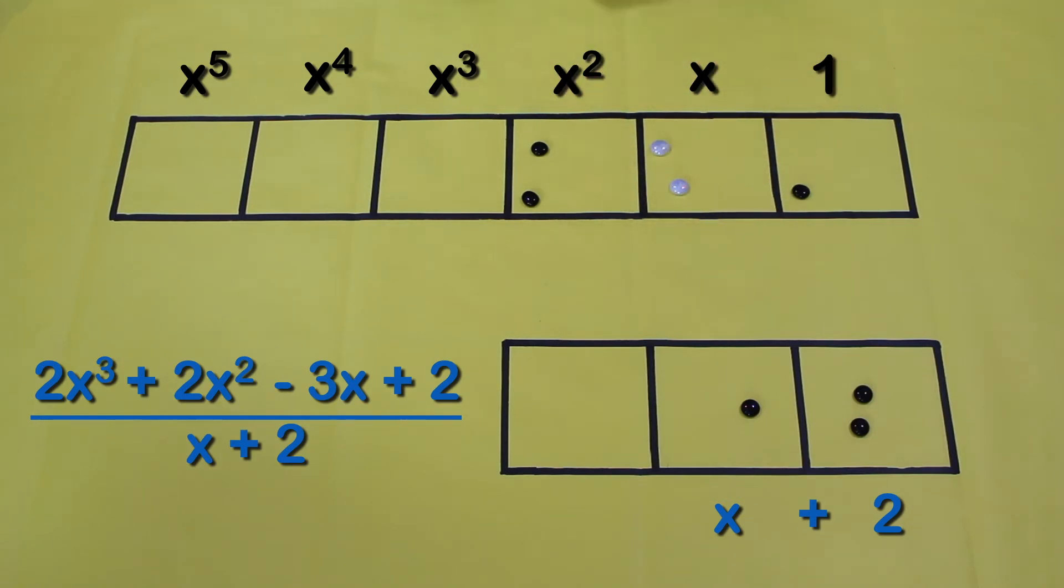Well no problem, just get rid of those guys and replace them with an antidot because of negatives. So here you have it, the final answer: 2x³ + 2x² - 3x + 2 divided by x + 2 equals 2x² - 2x + 1.